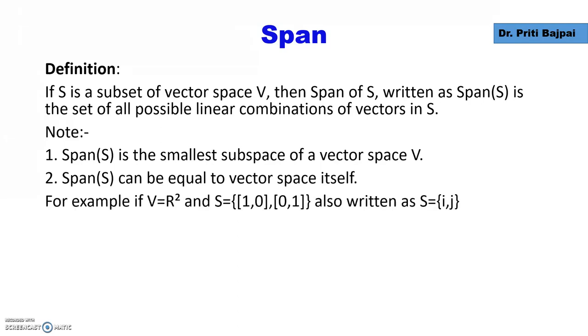Again, few things to remember. Span of S is the smallest subspace of a vector space V. Span of S can be equal to the vector space itself. For example, if we take V to be R² and we take the subset S with vectors [1,0] and [0,1] (which we also write as S = {i,j}, the unit vectors), then span of S will be the entire plane R².